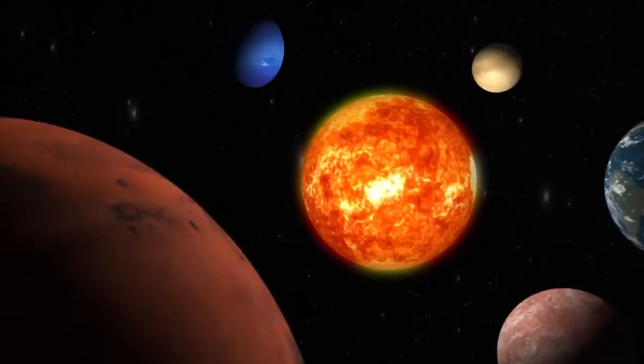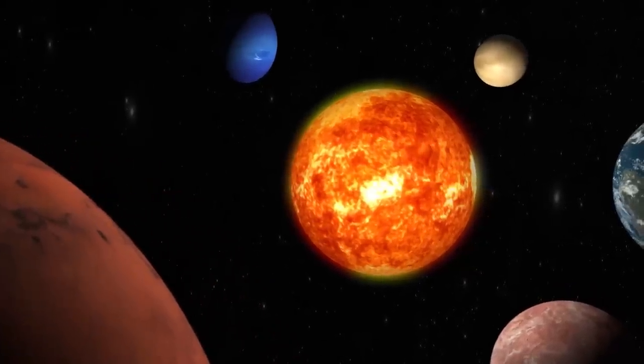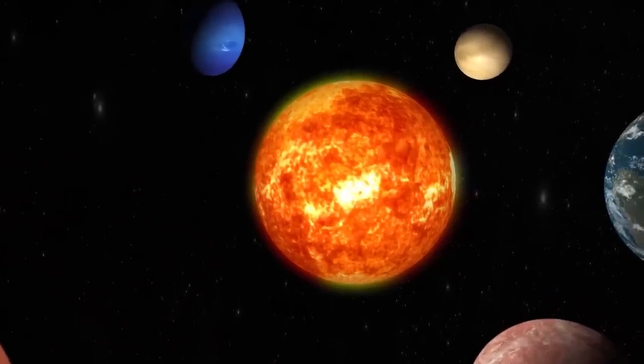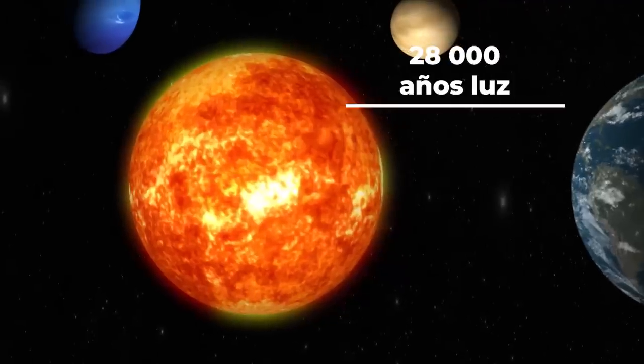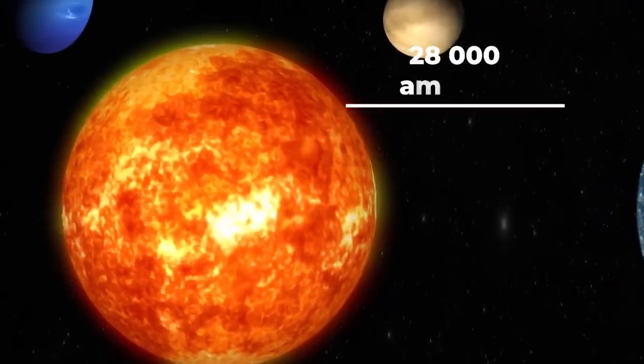Our solar system, which is located in the arm of Orion, is almost on the periphery of our galaxy. The distance that separates it from the galactic core is estimated at about 28,000 light-years.